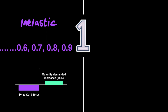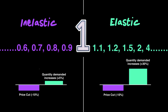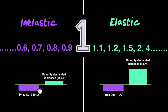The number one is the most significant threshold in PED. Any result below one — for example 0.9, 0.8, 0.7 — is called inelastic demand. A number greater than one — such as 1.1, 1.2, or 2.0 — is called elastic demand. Inelastic demand means that no matter how much you change the price, the proportional response in quantity demanded is relatively small.